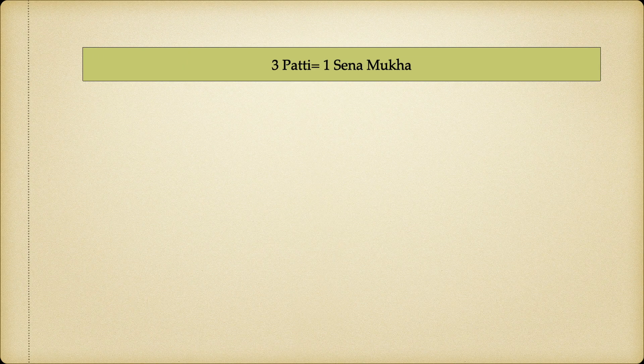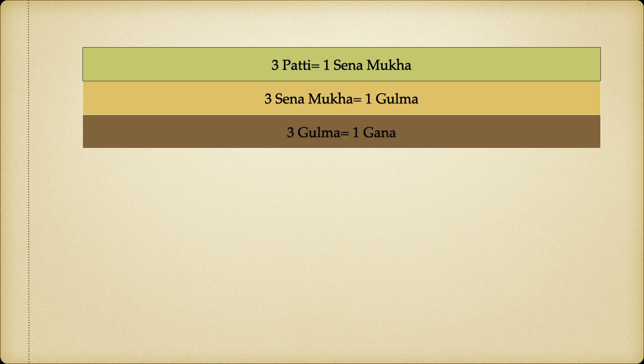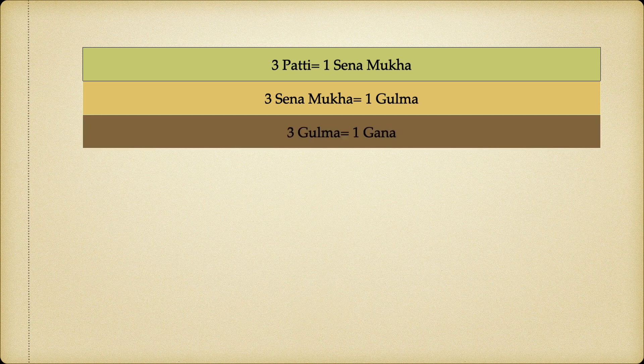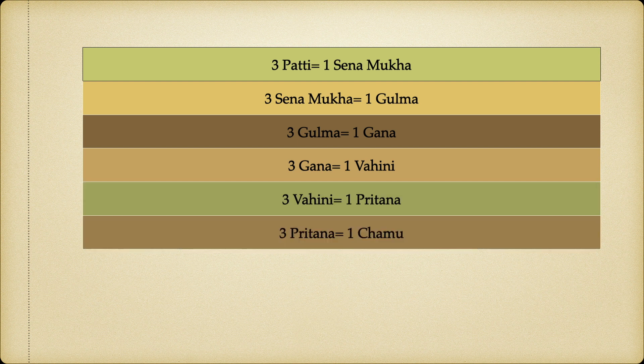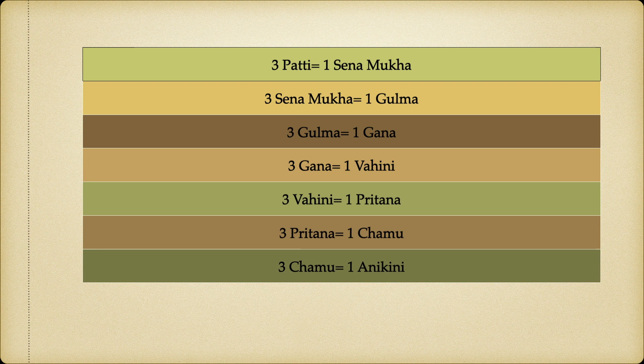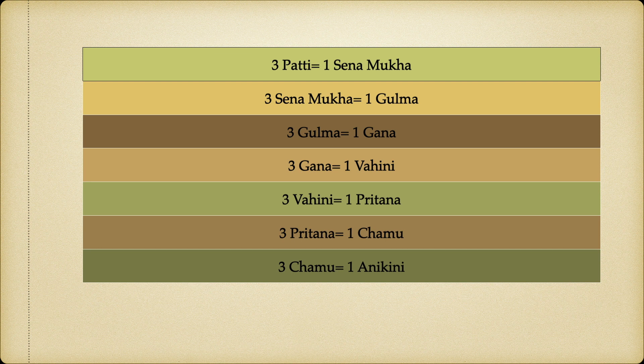Three Pattis make one Sena Mukha; three Sena Mukhas make one Gulma; three Gulmas make one Gana; three Ganas make one Vahini; three Vahinis make one Prithana; three Pritanas make one Chamu; three Chamus make one Anikini; and finally, ten Anikinis make one Akshauhini. So an Akshauhini is a grouping of all these units put together.